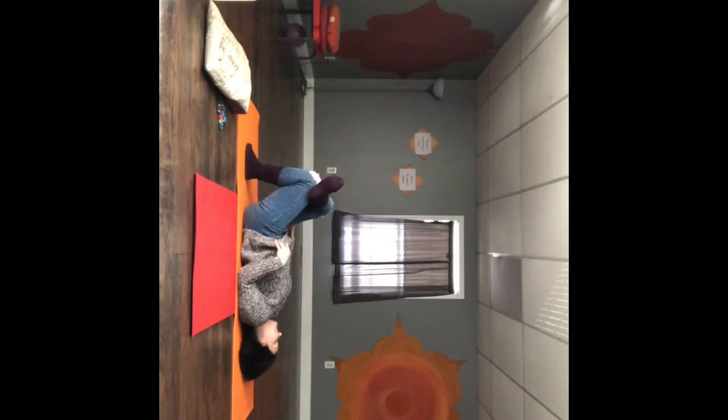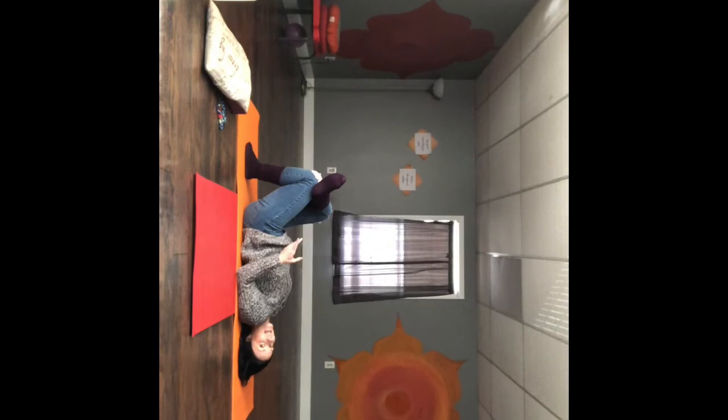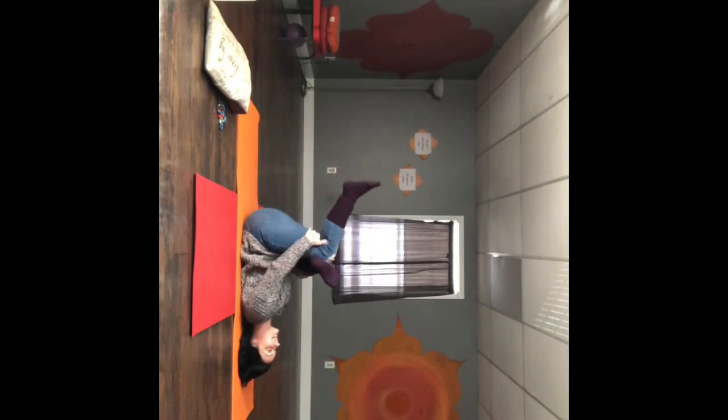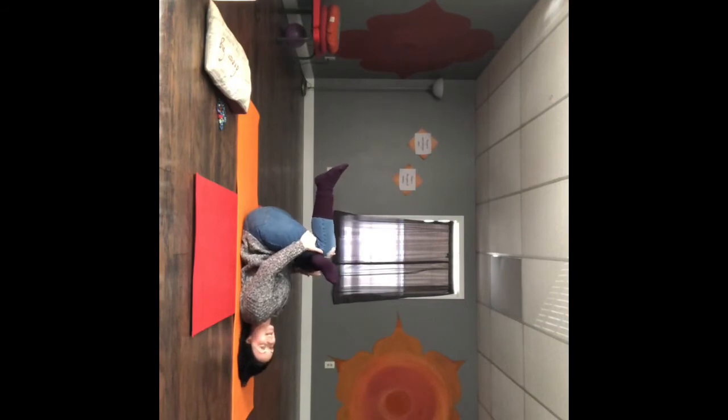Now, if all of this is too much of a challenge doing pigeon traditionally the way that I just showed you, then you can do your reclined pigeon, so you do it on your back. You cross one leg over, so right now I have my right ankle crossed over my left thigh right above the knee.